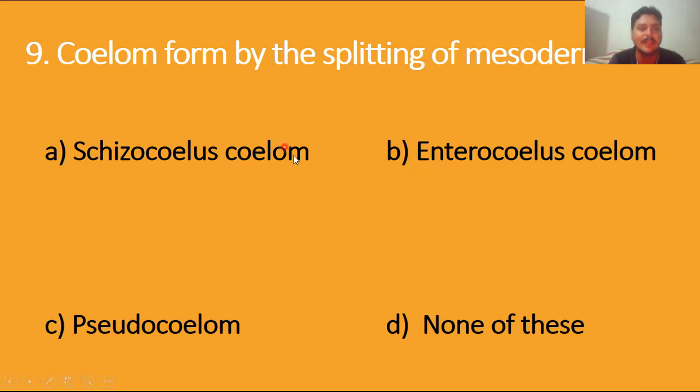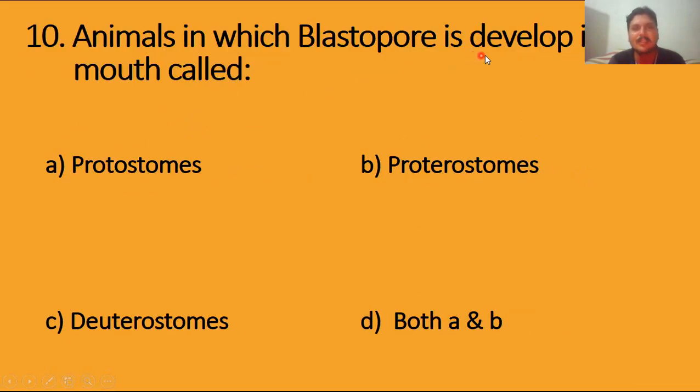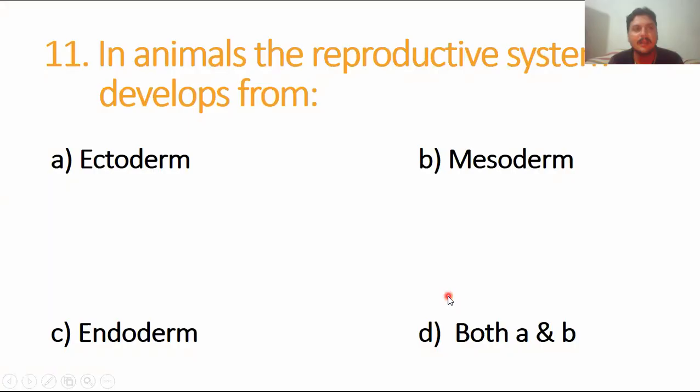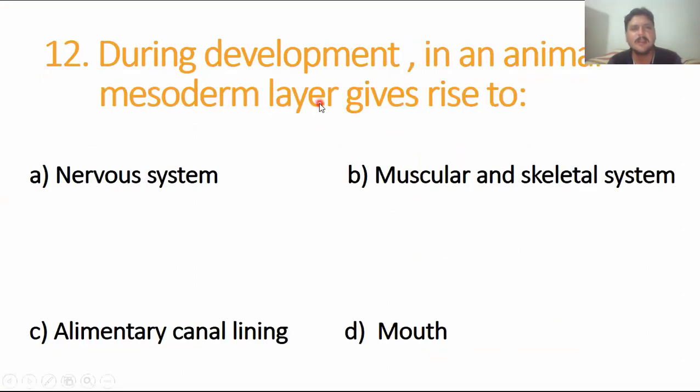Animals in which blastopore is developed into mouth, these are Protostomes, option D is the right answer. Next one is MC number 11. In animals, the reproductive system developed from mesoderm. Very simple. During development in animals, mesoderm layer gives rise to muscular and skeletal system. Nervous system is epidermal, alimentary canal is endodermal region. When we talk about mesoderm, the muscular skeletal system, option B is the right answer.